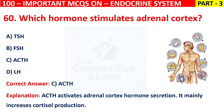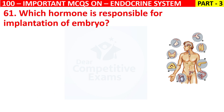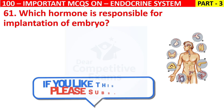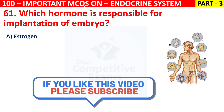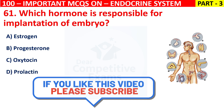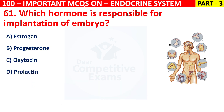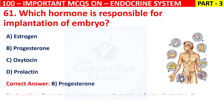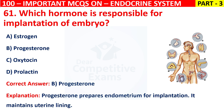Question 62: Which hormone is responsible for implantation of the embryo? Your options are Estrogen, Progesterone, Oxytocin, or Prolactin. The correct answer is B, that is Progesterone. Progesterone prepares the endometrium for implantation. It maintains the uterine lining.